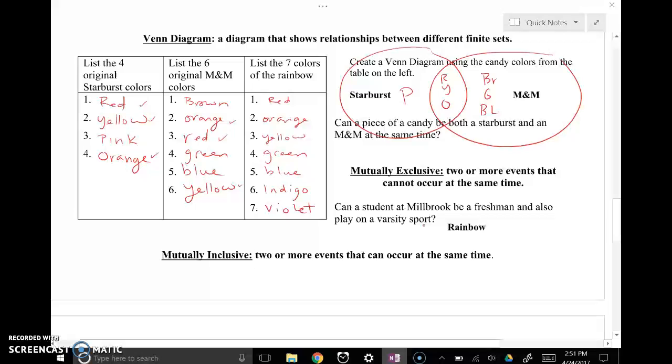Then this next question here kind of sets us up with, can a student at Millbrook High School be a freshman and also on a varsity sport? Well, yeah, that can happen at the same time. So that's this mutually inclusive. That's two or more events that can happen at the same time. So you can be a freshman and on a varsity sport at the same time. There is no rule that says freshmen can't play varsity sports. So two events that can happen at the same time will be called mutually inclusive. Two events that can't happen at the same time, mutually exclusive.